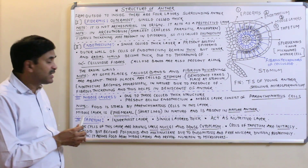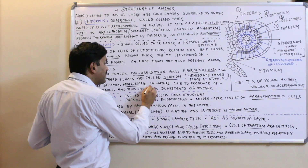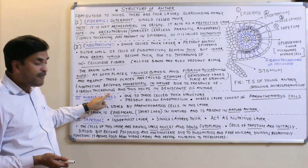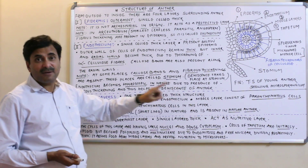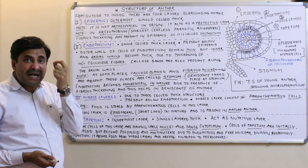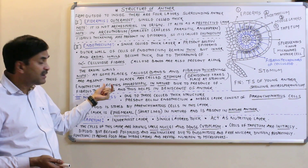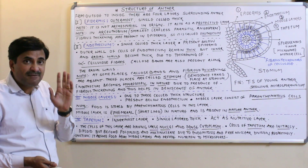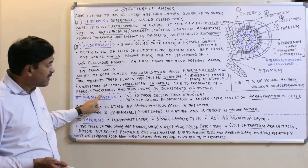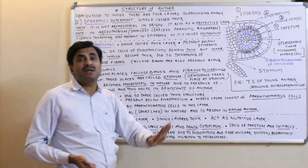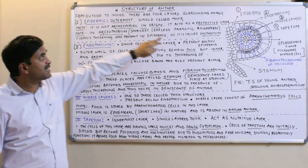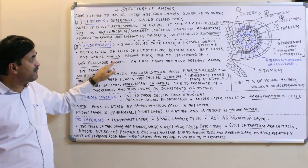The endothecium becomes hygroscopic in nature due to the presence of fibrous thickenings made of alpha cellulose, and thus helps in the dehiscence of the anther. The epidermis has a protective function, while the endothecium is chiefly meant for the dehiscence of the anther.